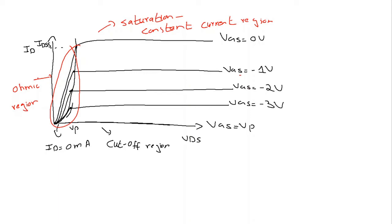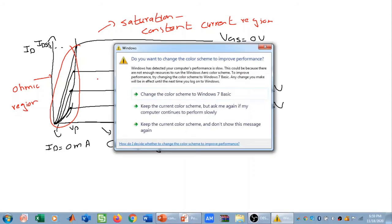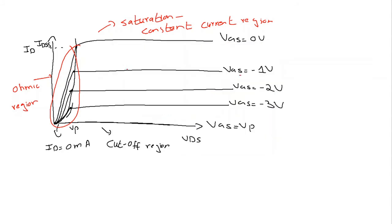In the ohmic region, as VGS becomes more and more negative — the gate to source voltage becomes more negative — the slope becomes more and more horizontal. As the slope becomes more horizontal, the slope is decreasing, and we know that the resistance is the inverse of the slope. So the resistance keeps on increasing. In other words, as VGS is made more and more negative, the resistance of the channel increases.